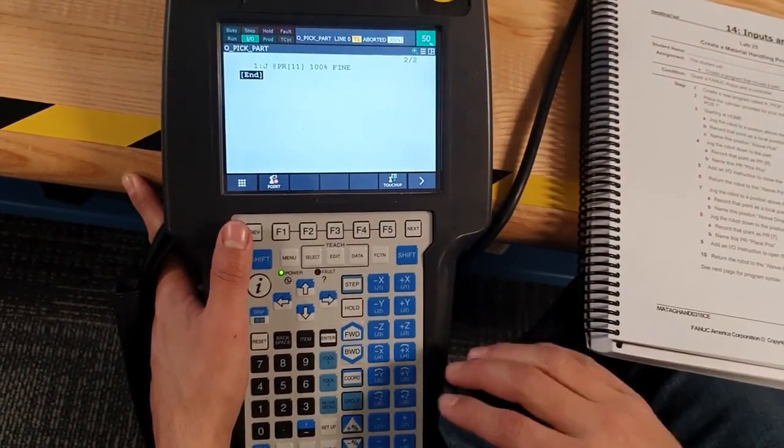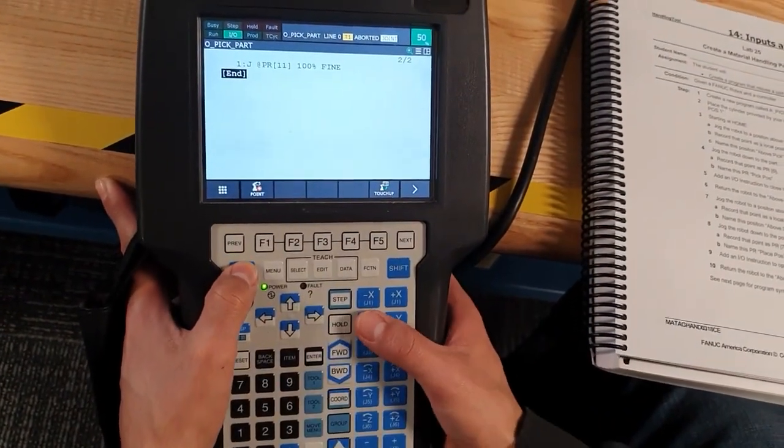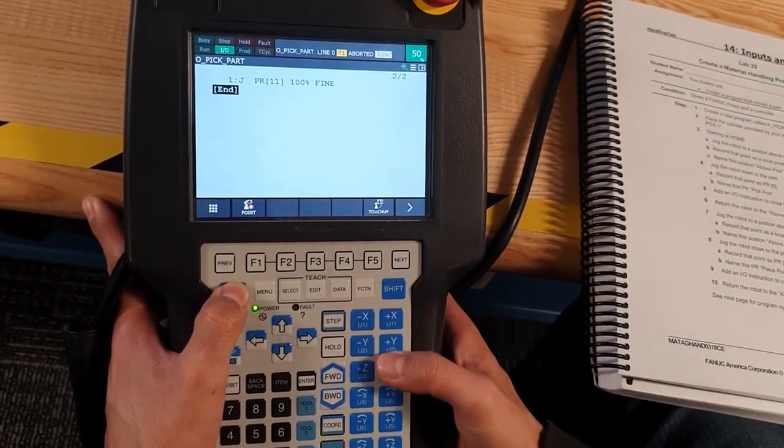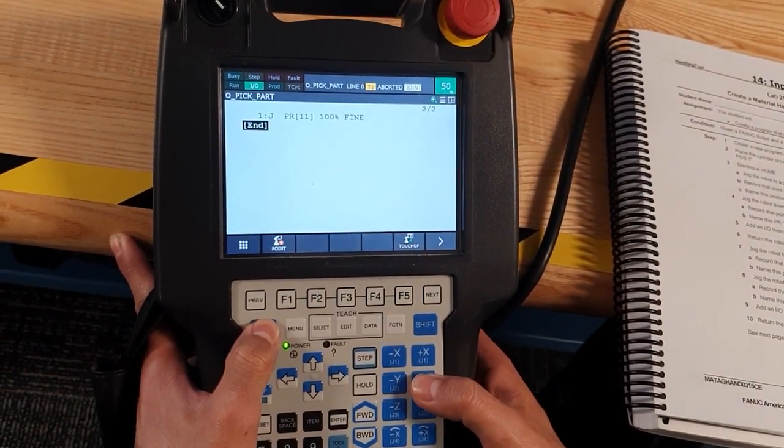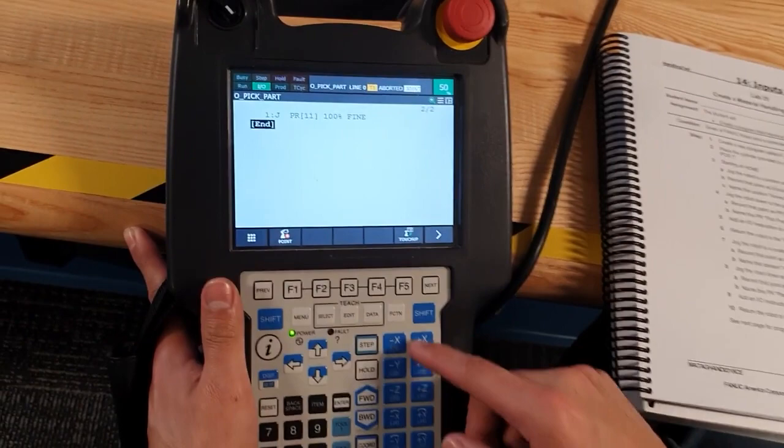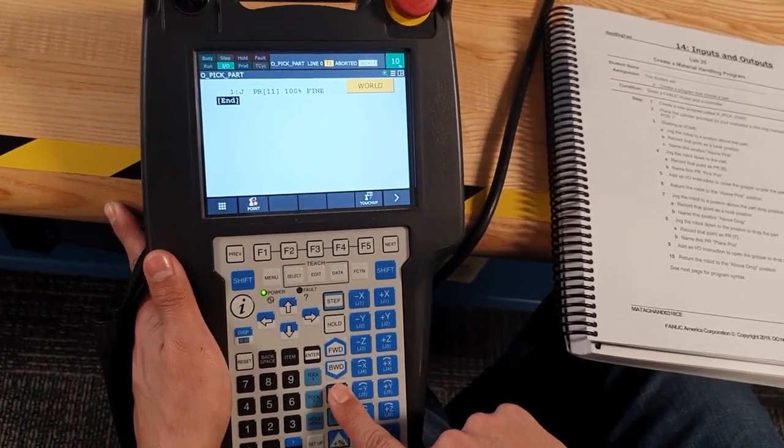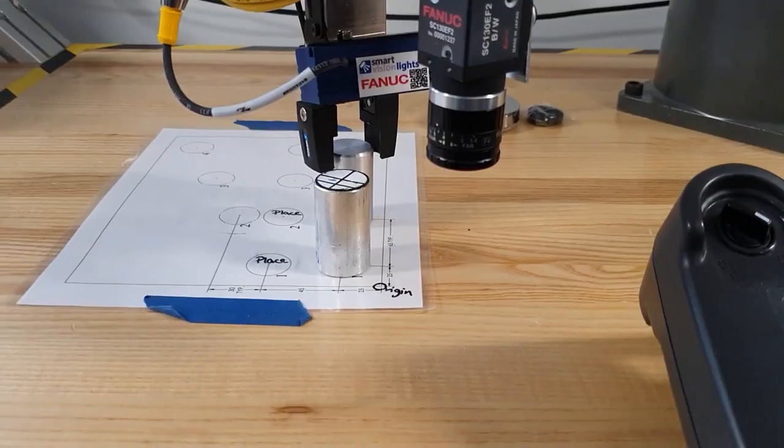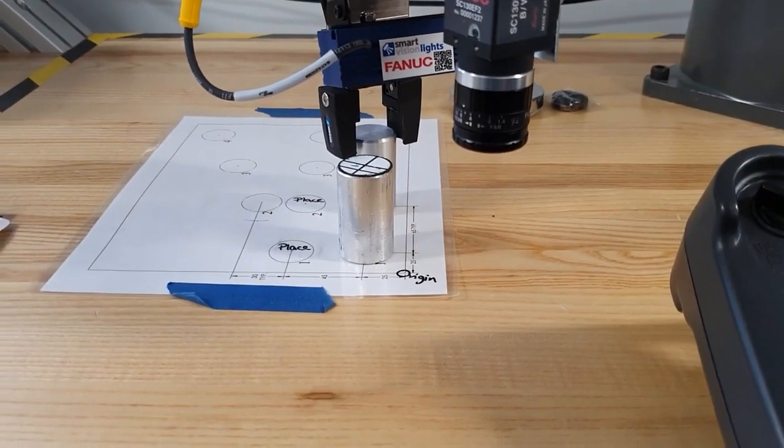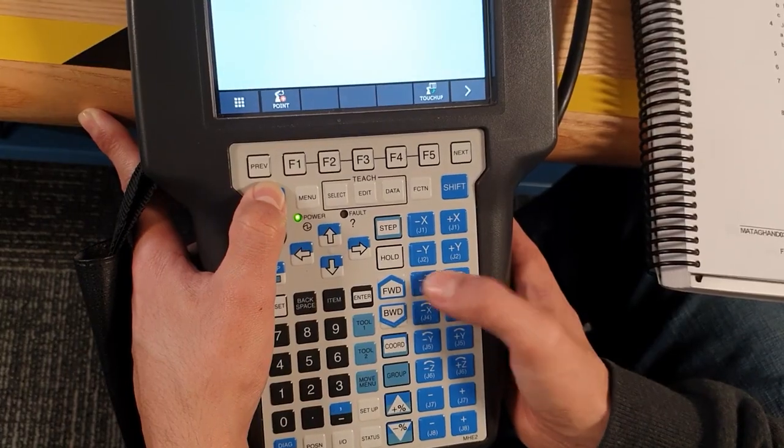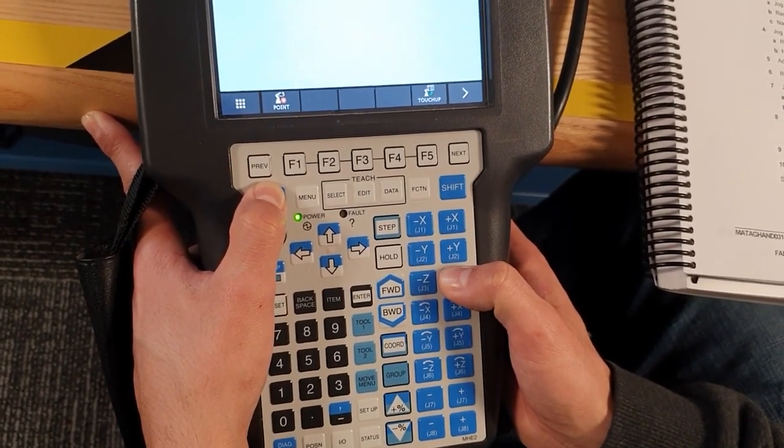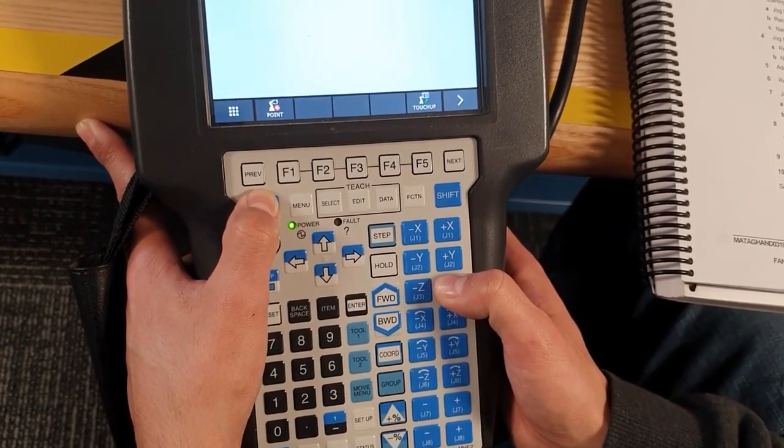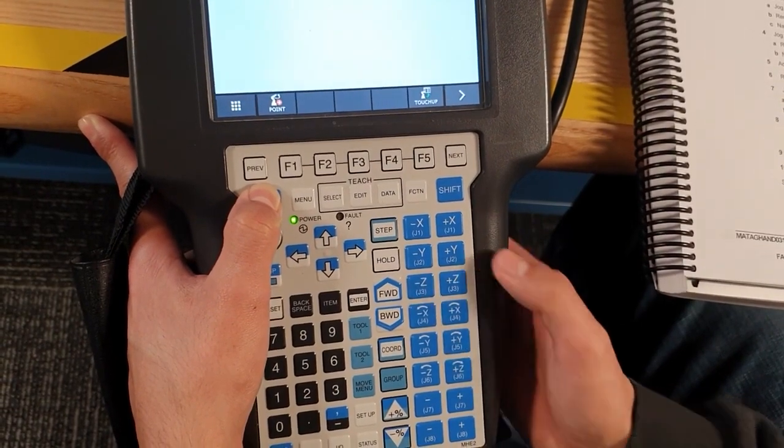And after that, we're going to move the robot to the pick and place. The robot should be in user. We are going to decrease the speed. We are going to press the C to be close to the part.